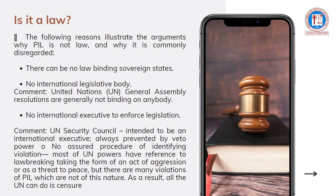When we talk about international law, there is always the controversy of whether we consider international law as a law. The following reasons illustrate why PIL is argued not to be law. First, there can be no binding of sovereign states. We have the concept of sovereignty — the ultimate power of the state to govern its own people. We have external and internal sovereignty, meaning other states, no matter how stable they are economically and politically, cannot really intervene with the affairs of another state.